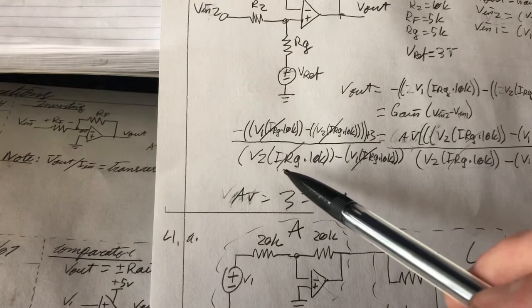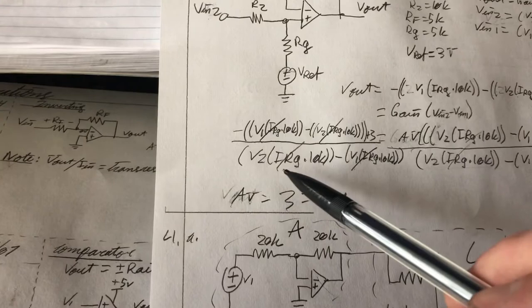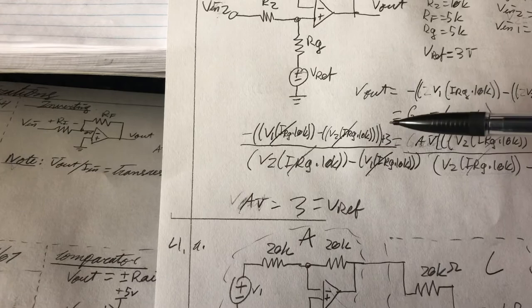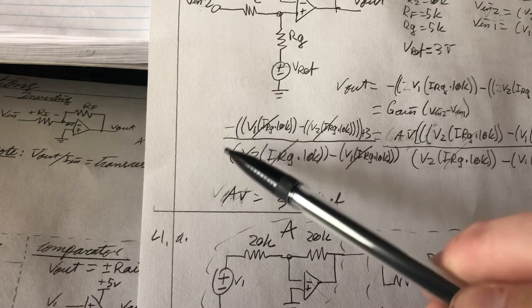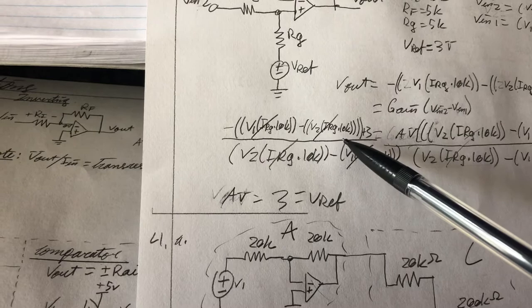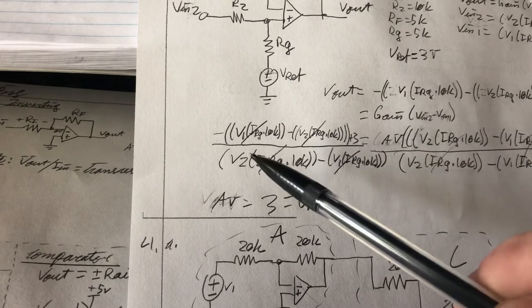And I know it's a little confusing with all these brackets here. But I found that if we distribute this negative, we run into a situation where we have this quantity V2 times IRG times 10K becomes positive, and this quantity here, V1 times IRG times 10K becomes negative, which is exactly like taking V in 2 and subtracting V in 1.